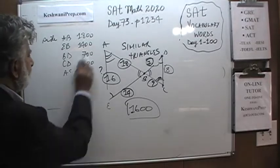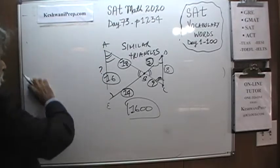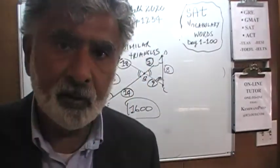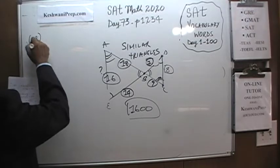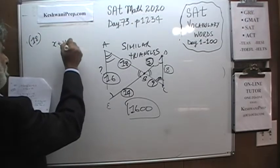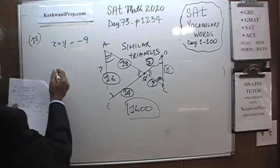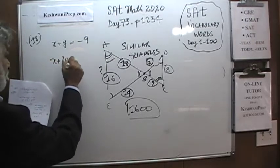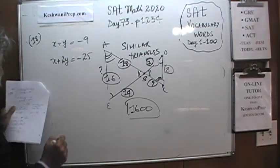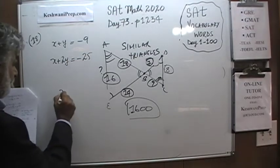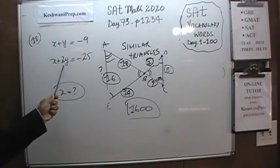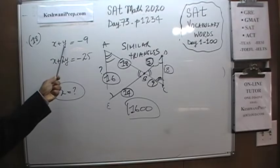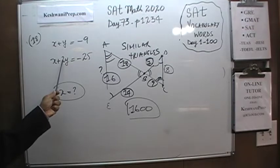Let's take a look at number 18. Number 18 is another one — very straightforward, very simple problem with two linear equations. We are told that x plus y is equal to negative 9, and the second equation gives negative 25. The question simply is: what's the value of x? If you want to find the value of x, what we want to do is get rid of y. Here we have 2y, and here we have 1y. If we can make this into 2y, we can get rid of it by subtracting one equation from the other.